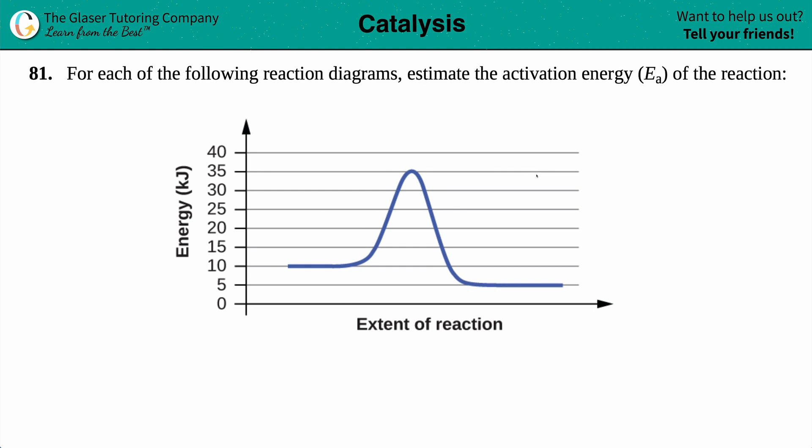Number 81. For each of the following reaction diagrams, estimate the activation energy, which is Ea, for the reaction.